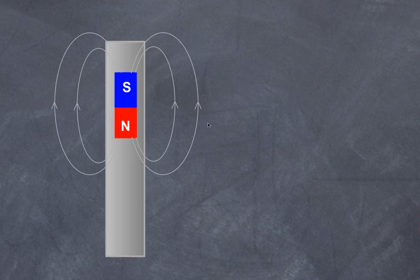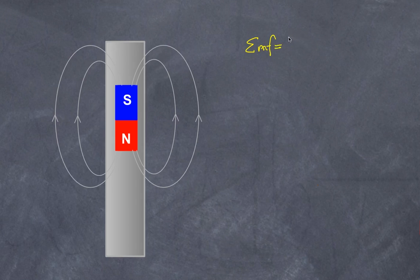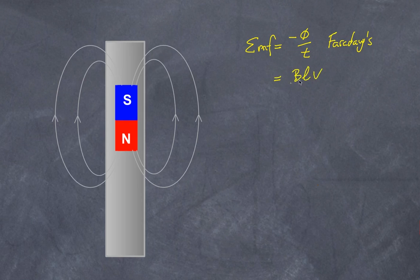Looking at the metal tube: the magnet has a magnetic field that leaves the north pole and goes into the south pole. When a magnet interacts with metal or a wire, an EMF is generated. This can be described by Faraday's Law — negative delta phi over delta t — which says a change in flux over time generates an EMF. Another way is the concept of BLV: if you have a magnetic field, a wire of length L, and move it at velocity v with B and v at right angles, you generate an EMF.